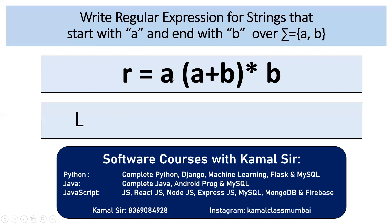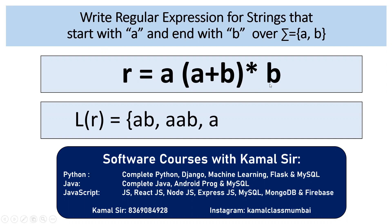So here, at minimum you will get A, epsilon, B — which is nothing but AB. Similarly, you can get AAB, AABB, and so on. All of them are starting with A and ending with B.